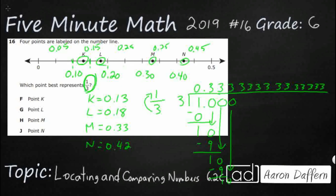So the most technically correct way to write that would be 0.3 with that little repeating bar, which means that three goes on forever. And as you can see, that is closest to what I thought M was, and so my answer is going to be H, point M.